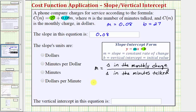So going back to the slope, which we know is 0.08, let's write this as a fraction with the denominator of one. So we'd have m equals 0.08 divided by one.